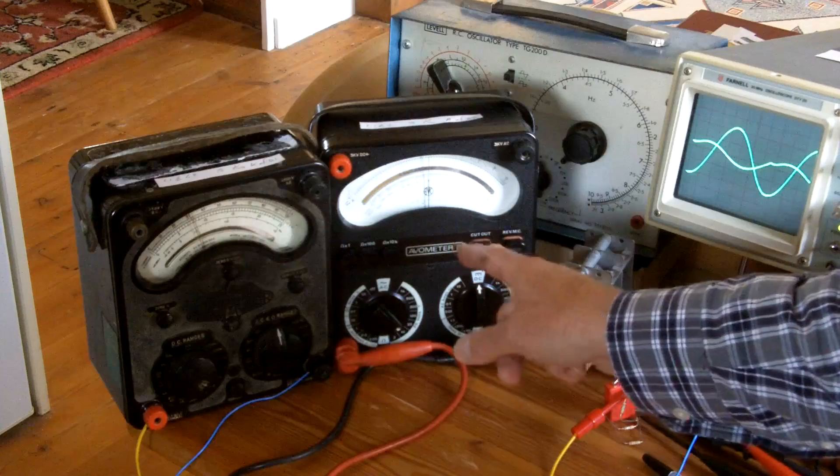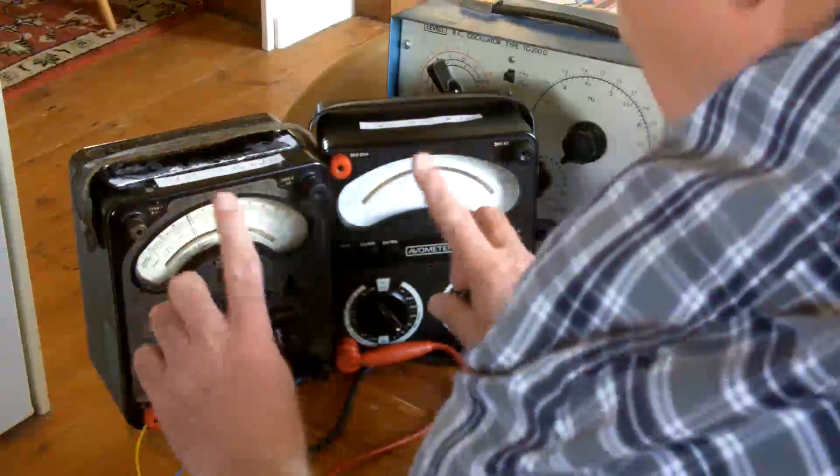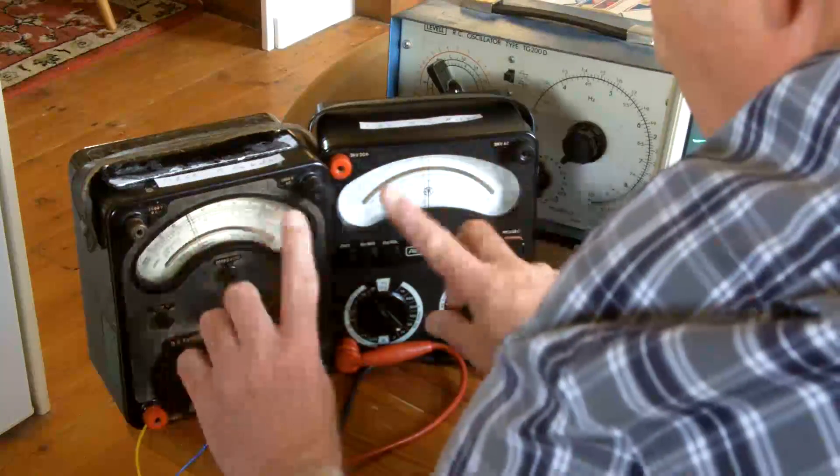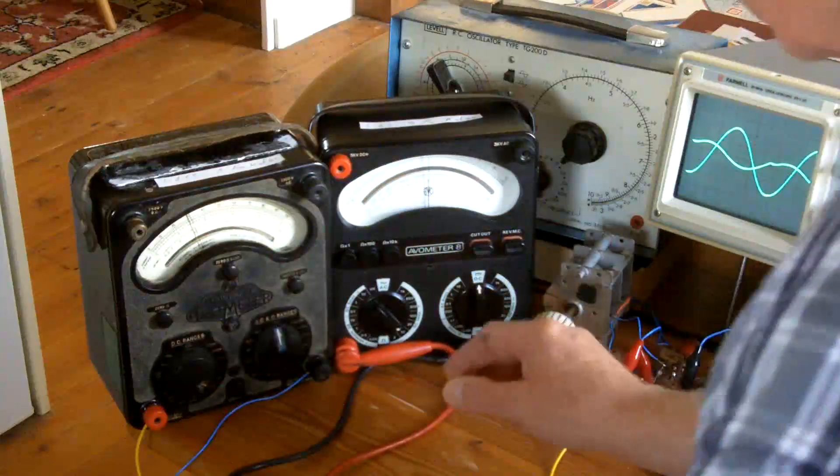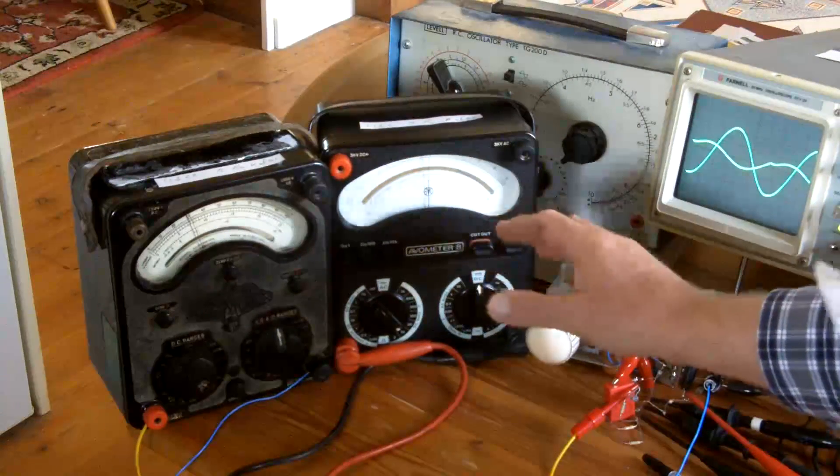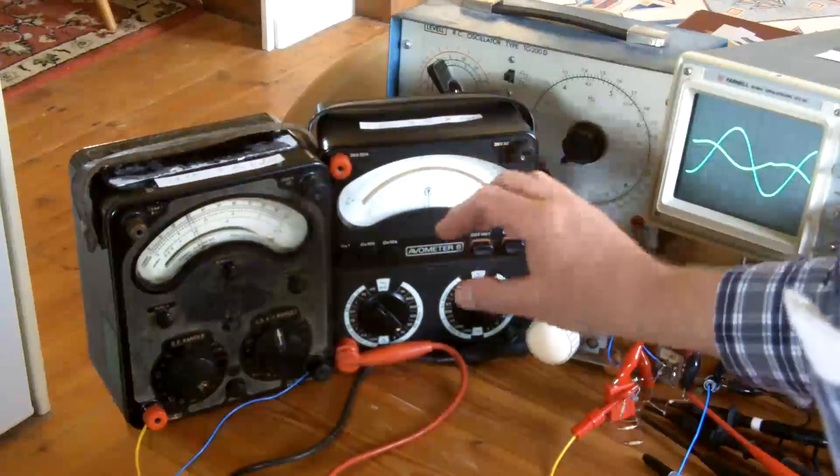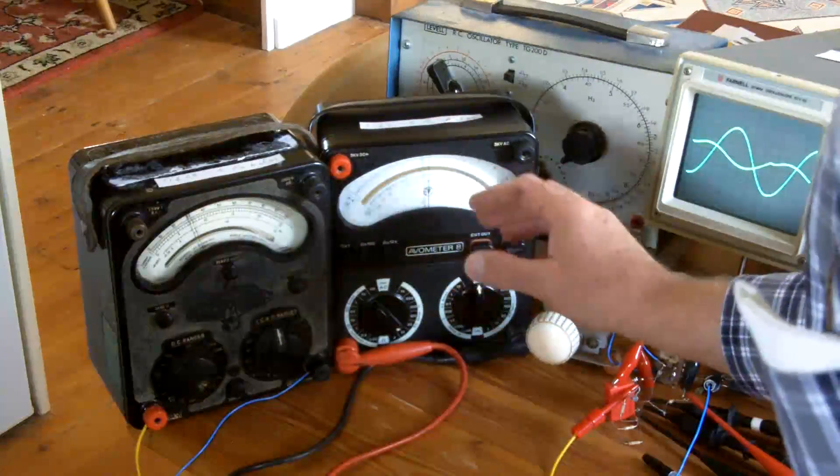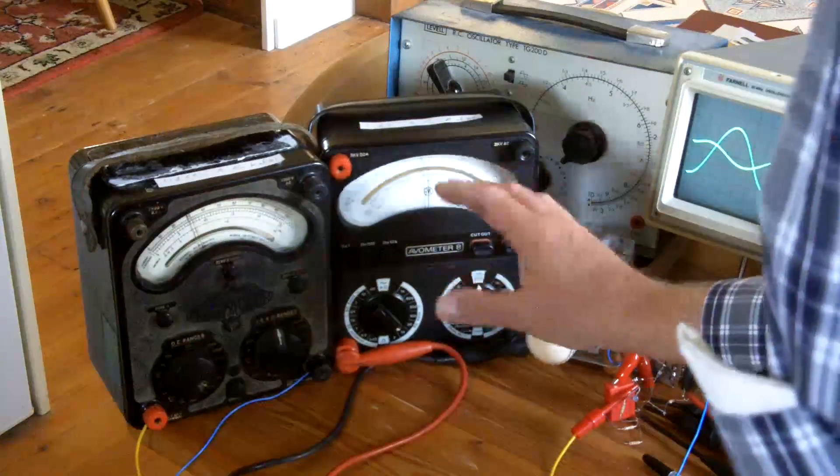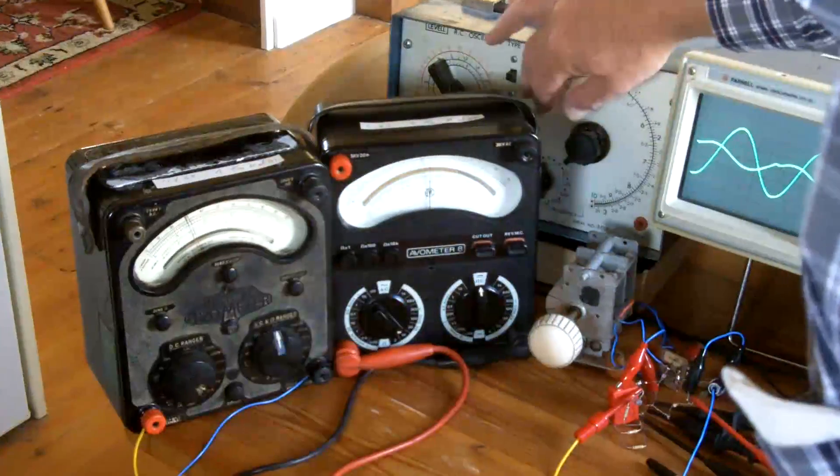And as I change the frequency what we should see is these meter needles move in opposite directions. The system is not linear and there are some issues with my signal generator changing voltage as I change frequency. But I want you to see in principle what is happening.